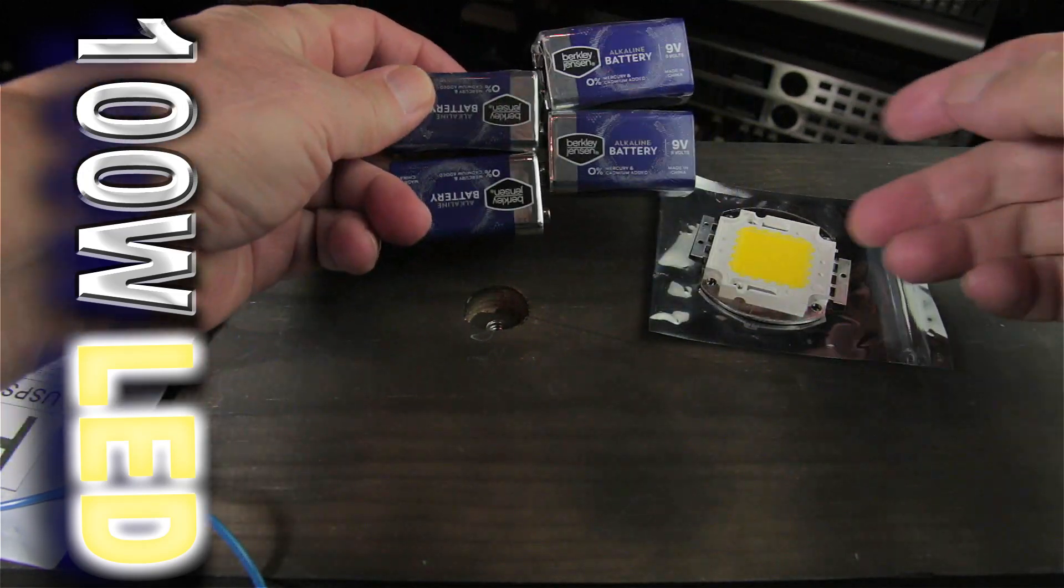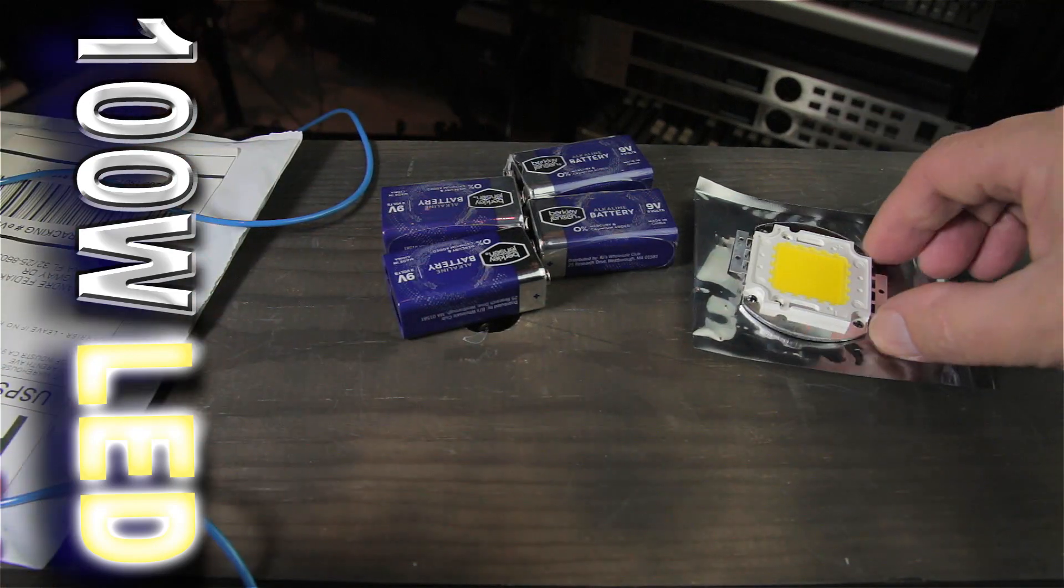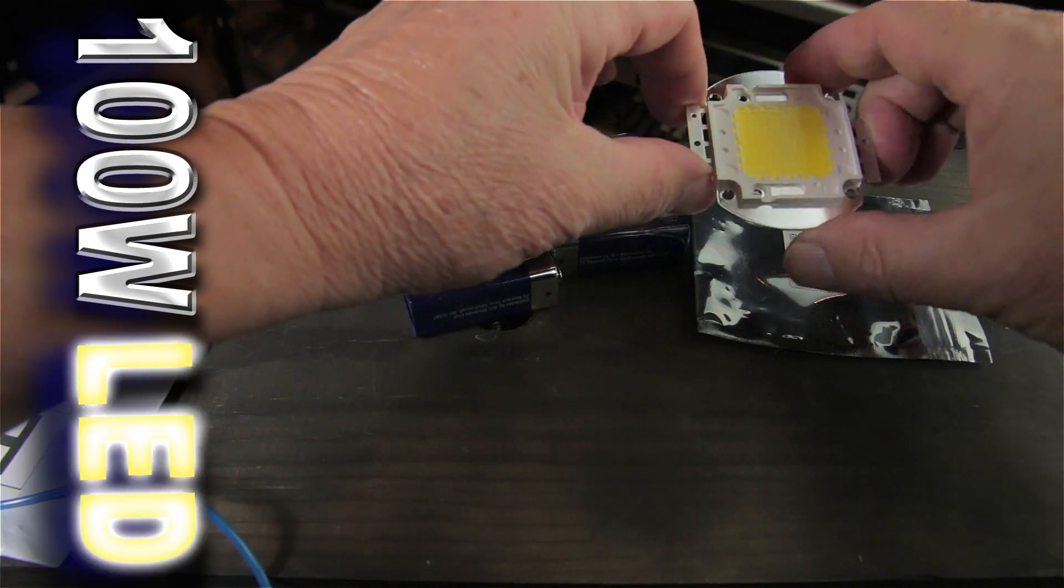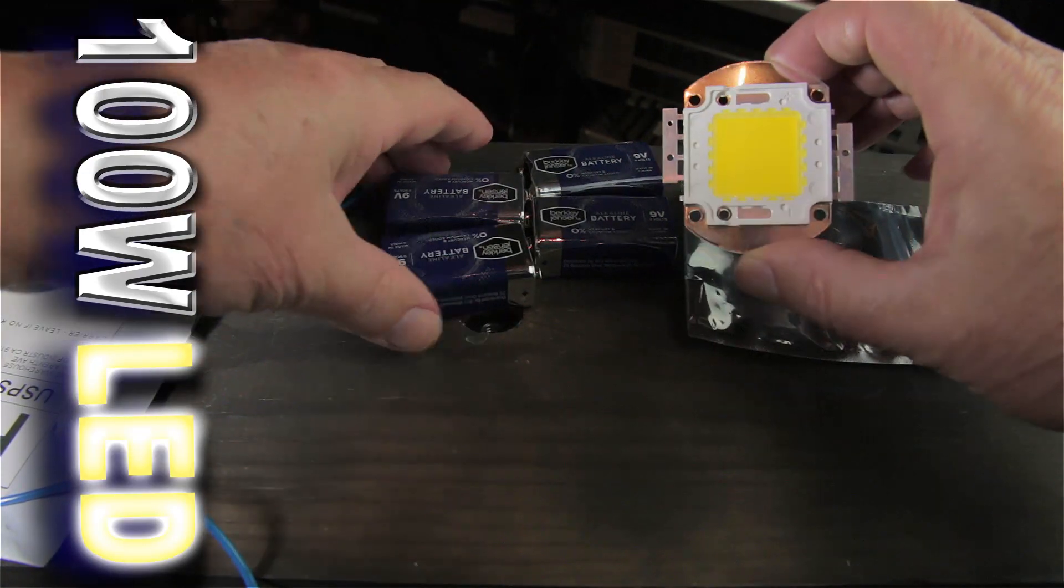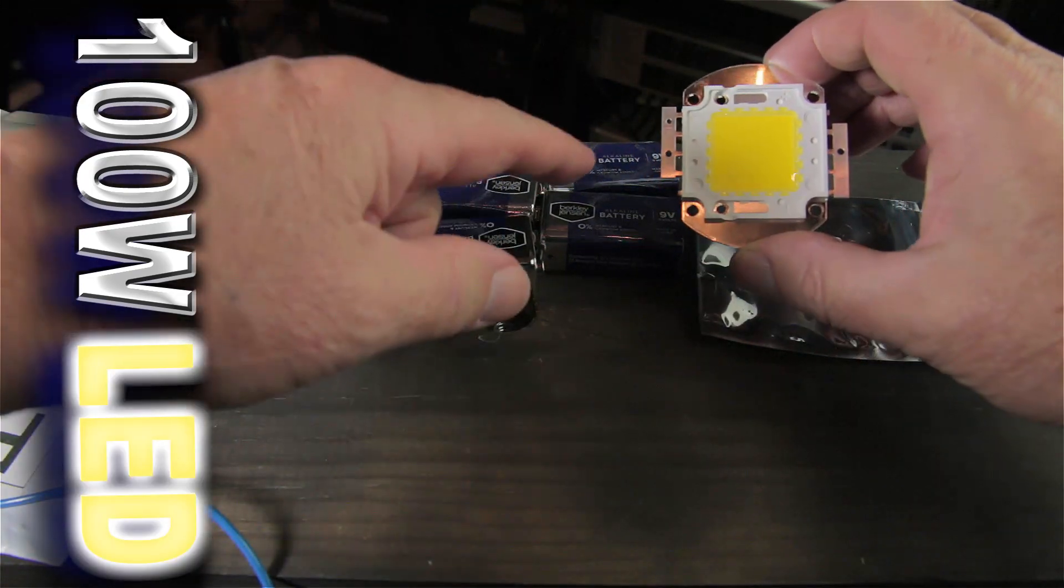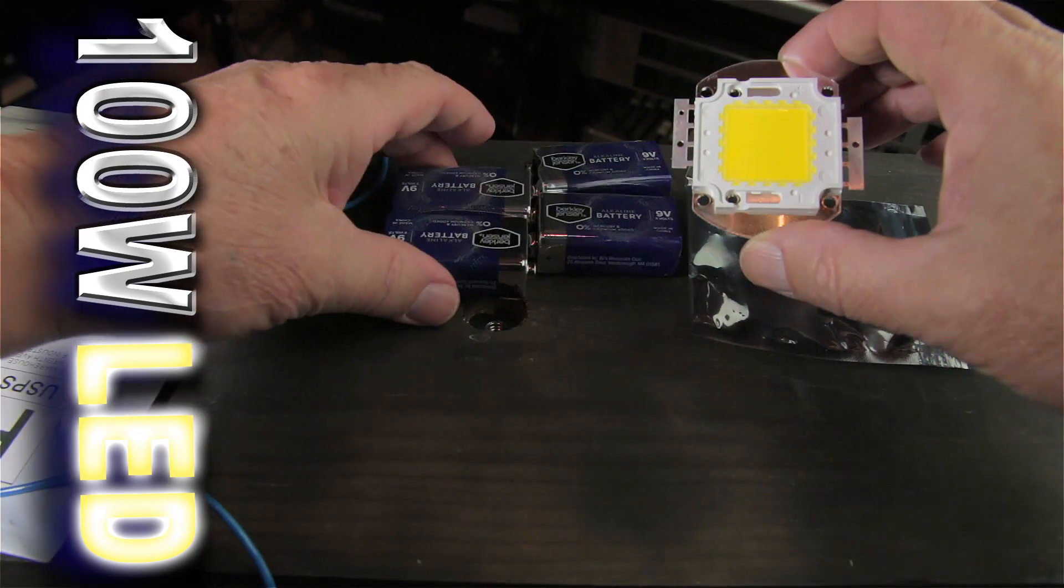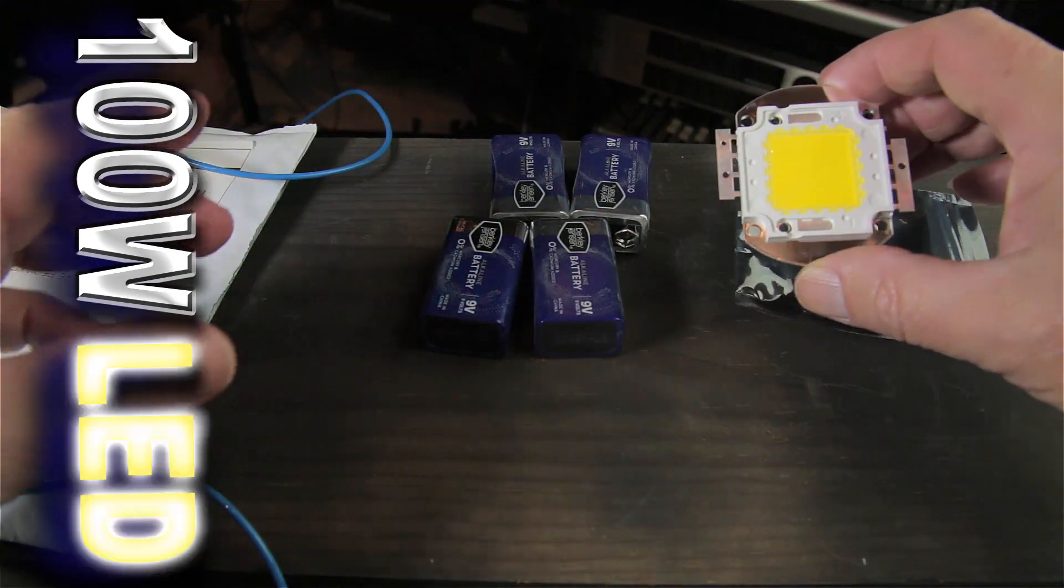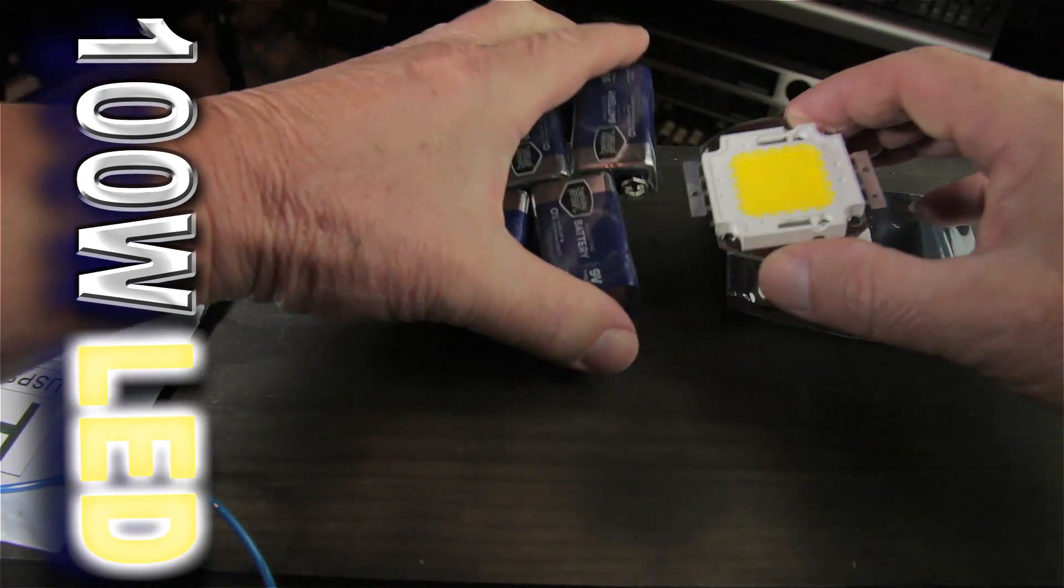Now this chip also will work only if the polarity is correct. I mean the connection minus to minus, plus to plus. Otherwise if minus will be connected to plus, this chip will not light. So let's see how we can determine that. All I need to do is just connect this chip to the batteries.